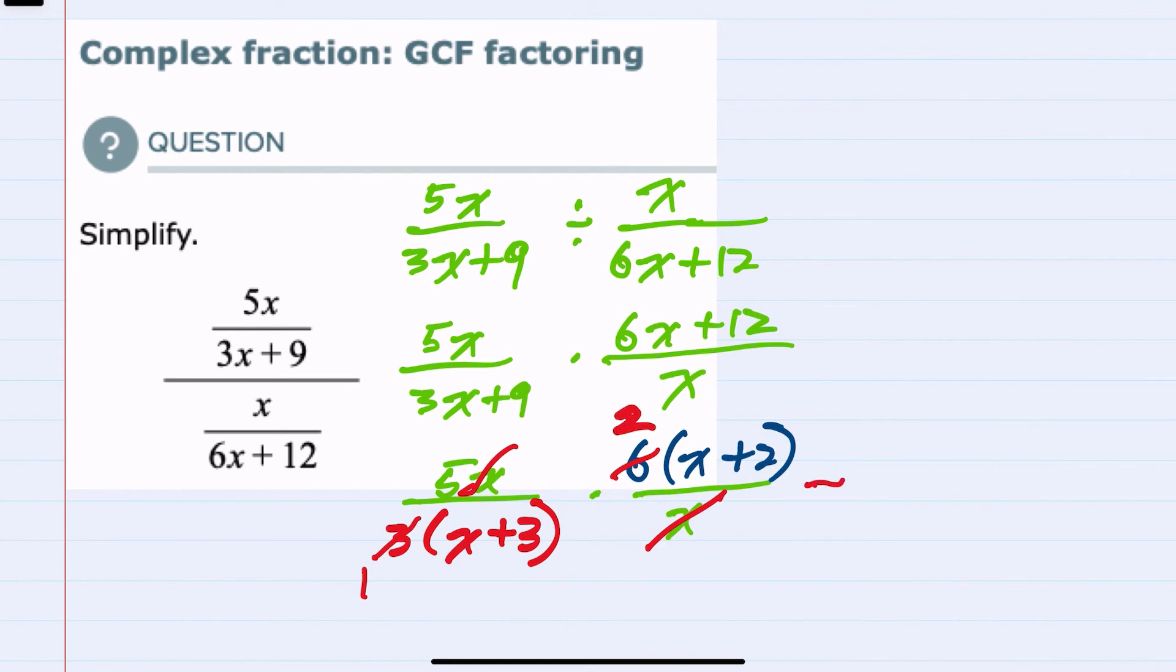Having completed the cross-canceling, I'm left with the 5 times 2 in the top, which is 10 in the x plus 2. And in the bottom, the x canceling leaves me with just a 1, 1 times 1 and x plus 3 being multiplied is just my x plus 3. So we've simplified this as much as possible.